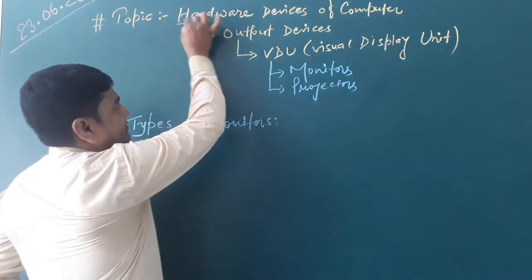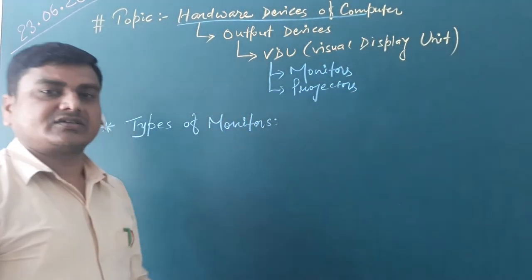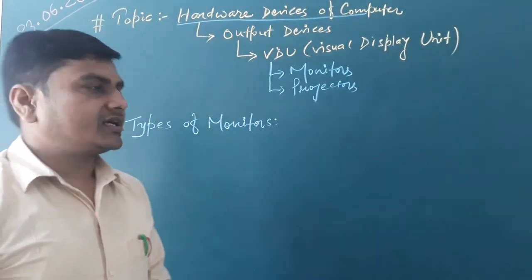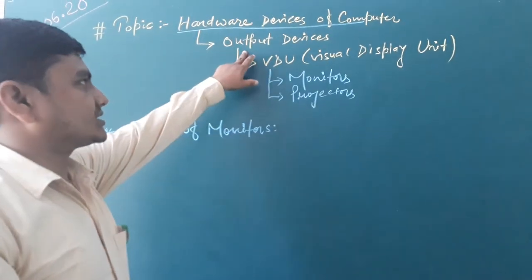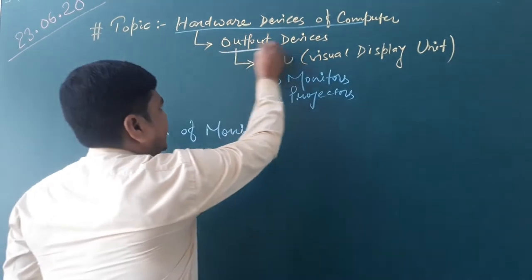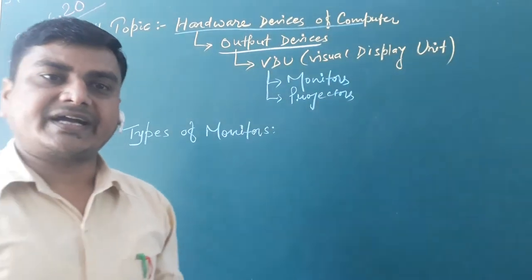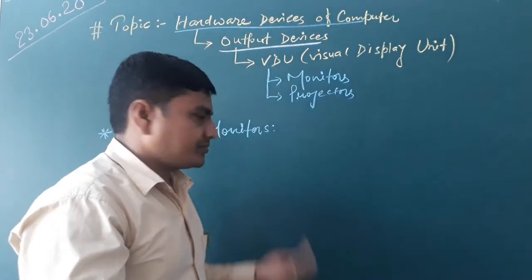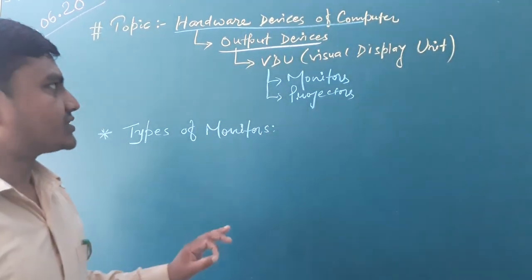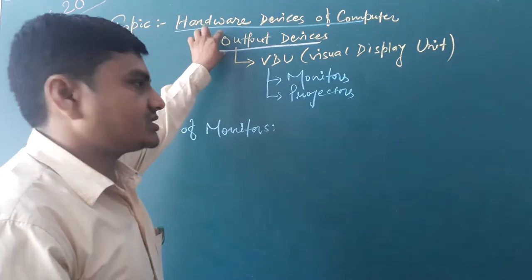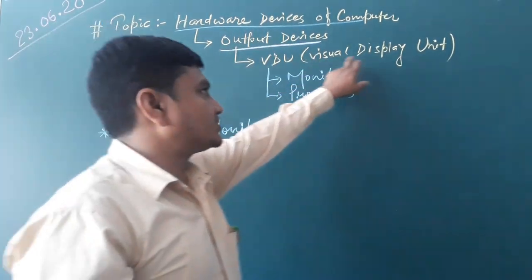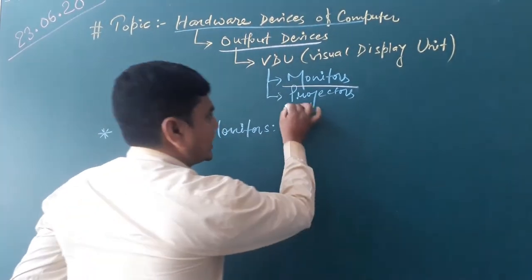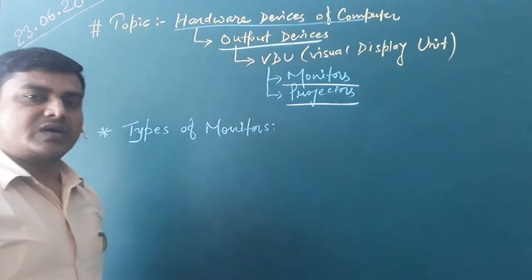Inside computer hardware, we have already discussed major categories of hardware like input device, output device, processing device, and memory units. Today, we are going to discuss about the output devices. Output devices have different categories like video, speaking devices, printers, and so on. In this video, inside the output device, we will discuss about VDU — Visual Display Unit. Inside the Visual Display Unit, we will discuss about monitors and projectors, one by one.